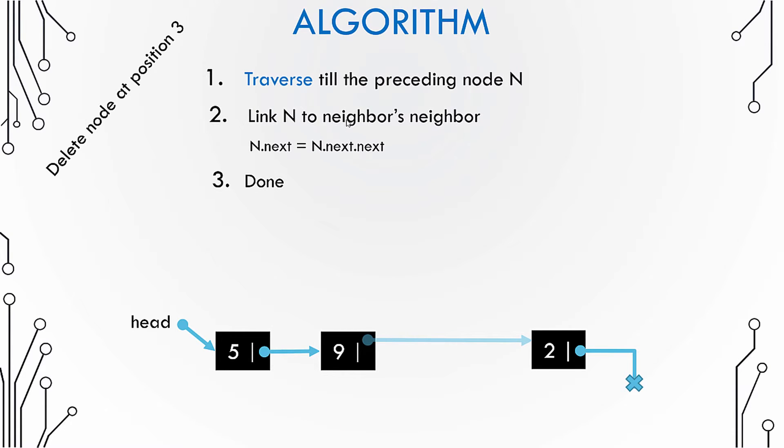So now we have deleted the node at position number 3. Easy, right?